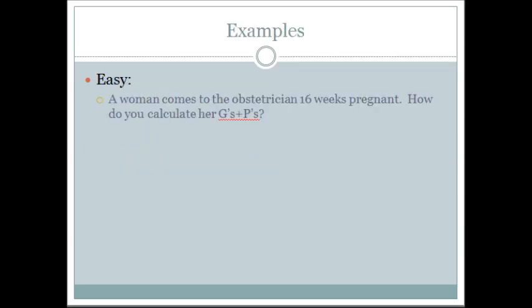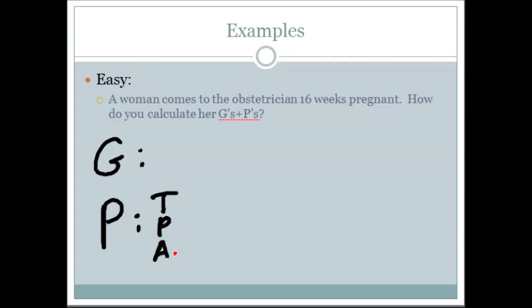Let's start with an example. A woman comes to the obstetrician 16 weeks pregnant. How do you calculate her G's and P's? The rest of her history is negative — she has no current living children and no other prior pregnancies. So let's figure out her G's and P's. For P's, we can either just say para by itself, or we can break it down into T, P, A, and L.